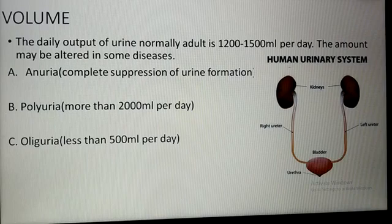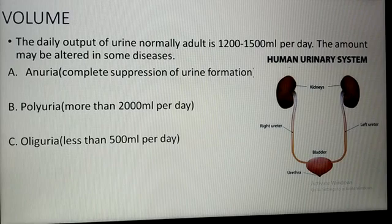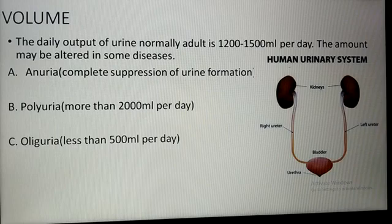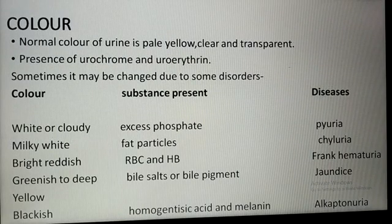Urine volume less than 500 ml per day is known as oliguria, found in severe dehydration, fever, cardiac failure, vomiting and diarrhea, and acute glomerulonephritis. Normally, urine color is pale yellow, clear, and transparent.